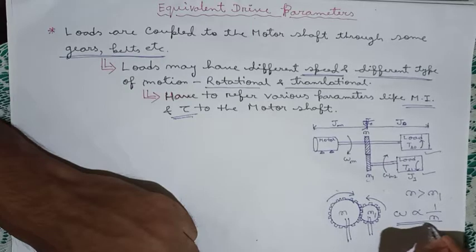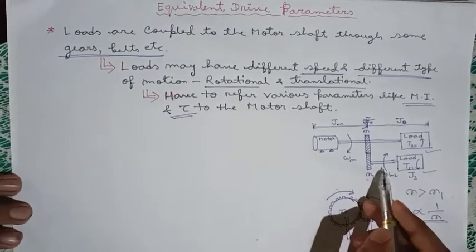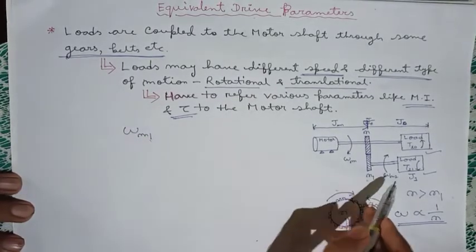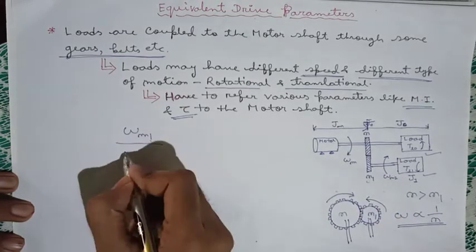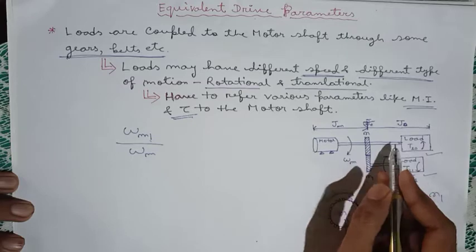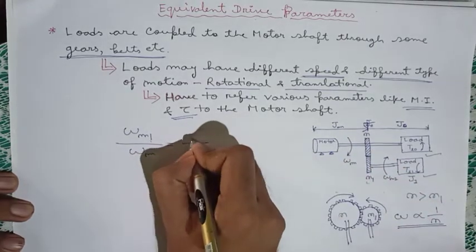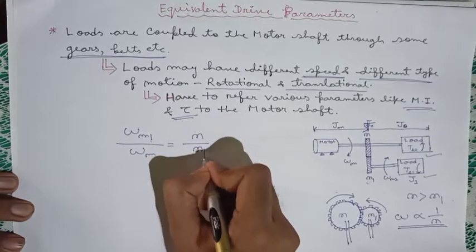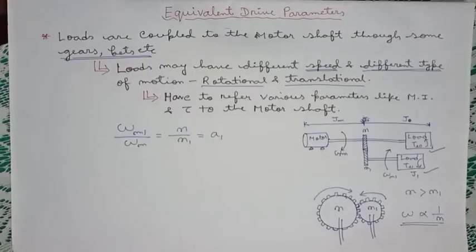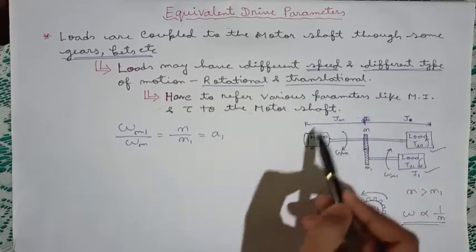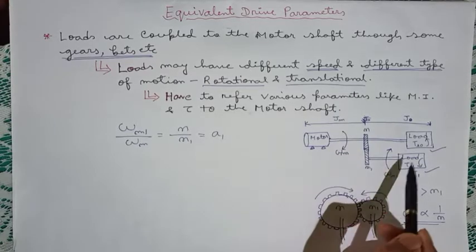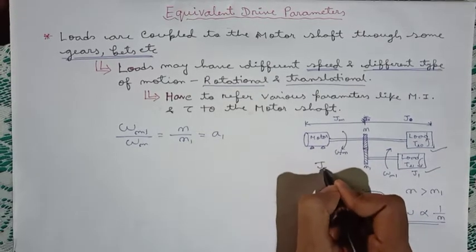We can conclude that speed is inversely proportional to the number of teeth in the gears. For this system, we can write that omega_m1, which is the speed of the load connected through the gear, equals N by N1 times omega_m, where omega_m is the speed of the motor shaft. We represent this ratio as a1. Now, as we want to refer the whole system to the motor shaft, let us define the equivalent moment of inertia of the whole system referred to the motor shaft as J_equivalent.